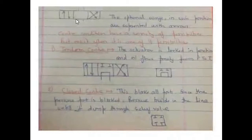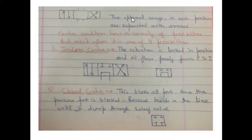Now you can see a four by three way DCV, direction control valve. The operational ways in each position are represented with arrows.